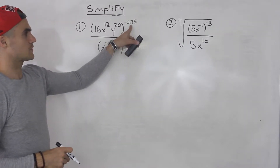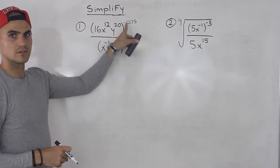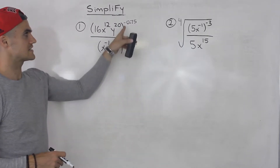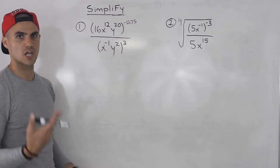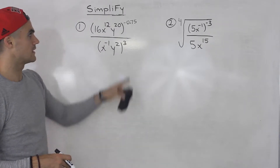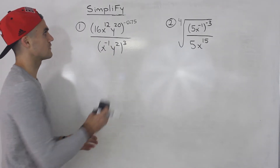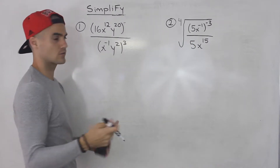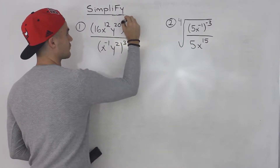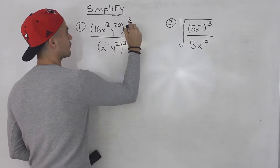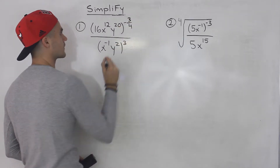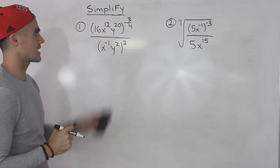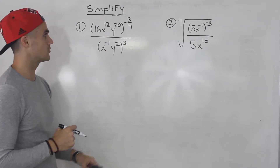Notice here that we're dealing with a decimal exponent, negative 0.75. Usually we have a fraction, and whenever I see a decimal exponent like this, I always like to change it to the lowest common fraction. Negative 0.75 is the same as negative 75 over 100, which simplifies to negative 3 over 4. So all of this to the power of negative 3 over 4 is the same as all of that to the power of negative 0.75.